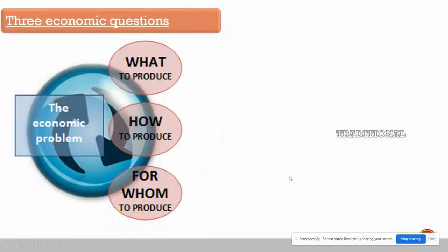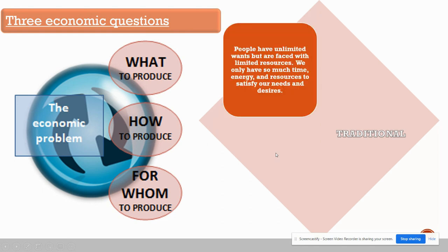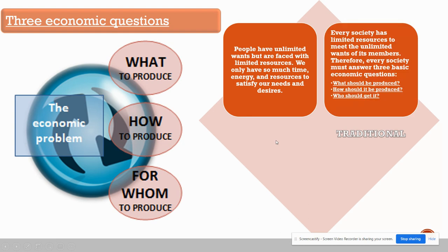Every country has to answer three economic questions, and all countries do different things when it comes to answering them. The three questions are: what to produce — which depends on your resources; how to produce it — whether controlled by the government or privately; and for whom to produce. People have unlimited wants but face limited resources, so every society must answer these three basic questions: what should be produced, how it should be produced, and who is going to get it.